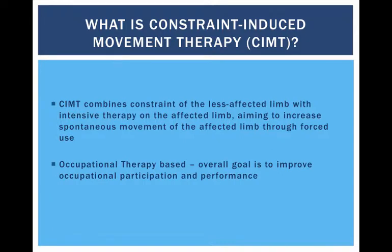Constraint-induced movement therapy is an occupational therapy-based upper limb treatment for children with cerebral palsy. This therapy combines constraint of the less-affected or non-affected limb with a splint, bandage, or harness, with intensive therapy on the affected limb. This aims to increase spontaneous movement of the affected limb through forced use, increasing the child's bimanual skills and therefore improving daily function and performance.